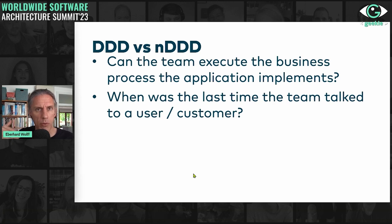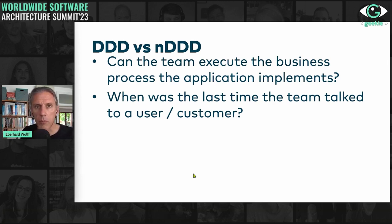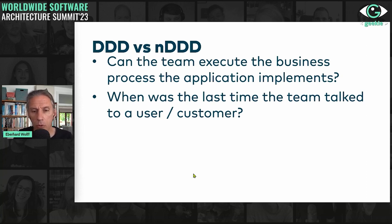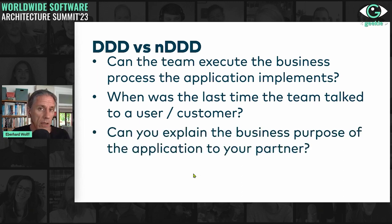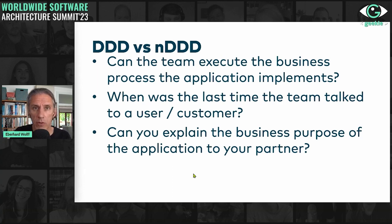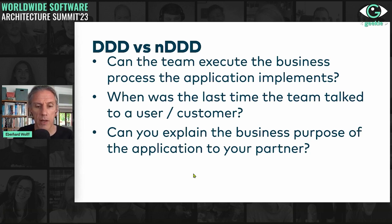You need both inputs. On the business level, you might want to change processes and implement them differently. Users are experts on what's going on at the very detailed level. Can you explain the business purpose of the application to your partner at home? If you're not able to do so, chances are you don't really understand the domain, and therefore it's hard to come up with domain-driven design.